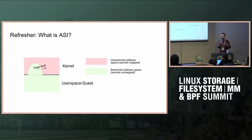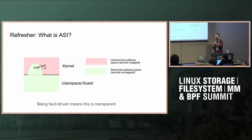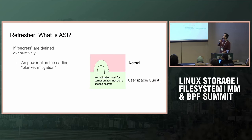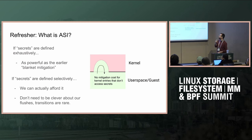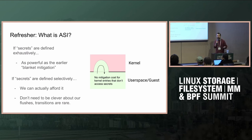Instead of the transition being between trusted and untrusted code, we try to run some of the trusted code in the context of the untrusted code — in an untrusted address space we call the restricted address space. We detect that we need to exit this restricted address space with a page fault, which means this isn't something all of the kernel needs to be aware of — it's transparent. If we draw this dotted line smartly enough so that nothing of security relevance is mapped in the restricted address space, this is just as powerful as that blanket mitigation. And if we define it selectively enough that we don't have to exit it very often on kernel entries, most of the time we don't pay this mitigation cost.